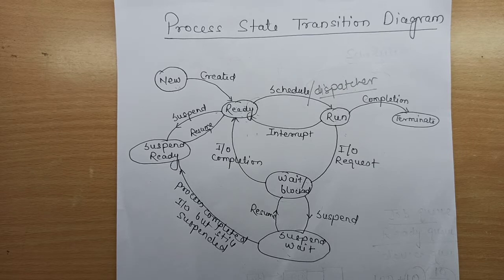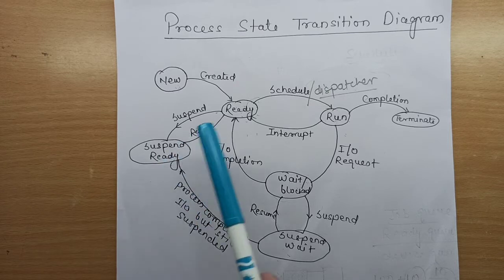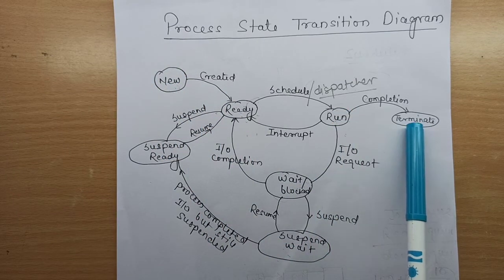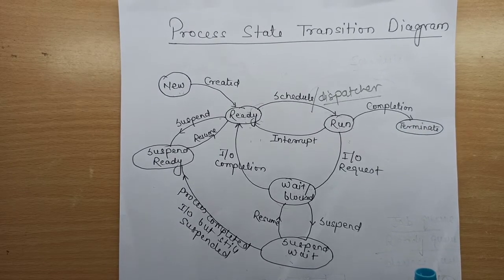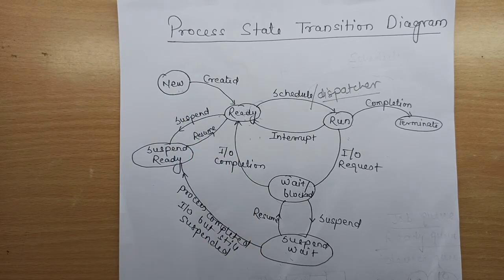The next topic is the process state transition diagram. In the process control block, one attribute is the process state. During the execution of a process, it changes its state. The state of a process describes what that process is currently doing — its current activity. You can see in the diagram the ellipses, which represent the different states a process can be in during its lifetime, from creation to termination.